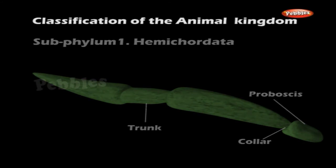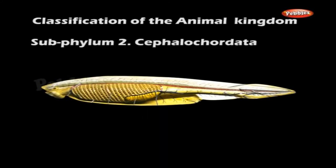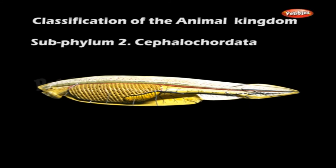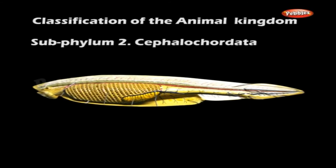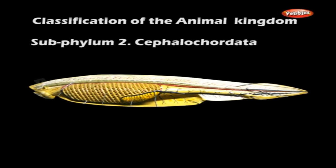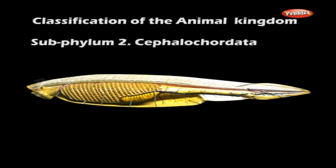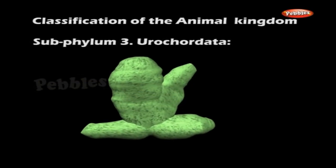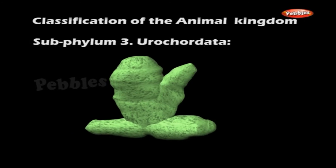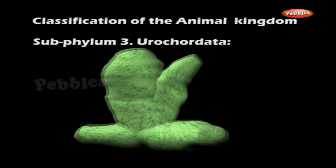Subphylum 2: Cephalochordata. They are fish-like marine chordates. The notochord is seen throughout the length of the body, extending beyond the brain. Subphylum 3: Urochordata. In Urochordata, the notochord is confined to the tail region of the larva. The adults are degenerate, sessile forms. Example: Ascidians. Subphylum Vertebrata — the notochord changes itself to form the vertebral column.